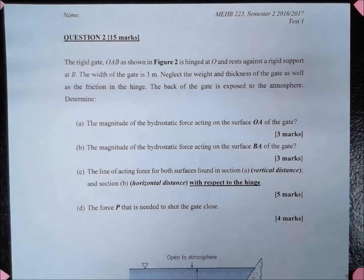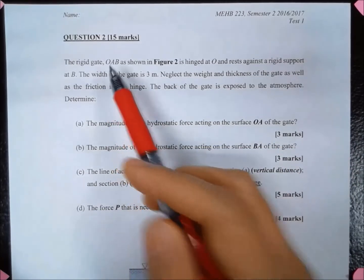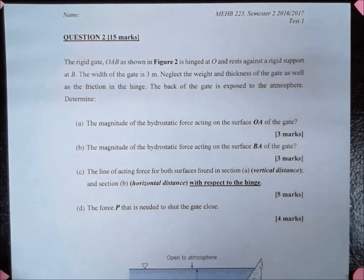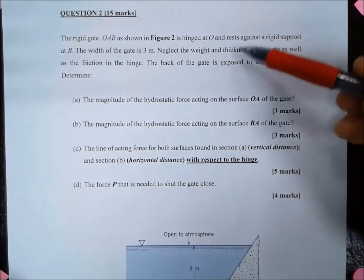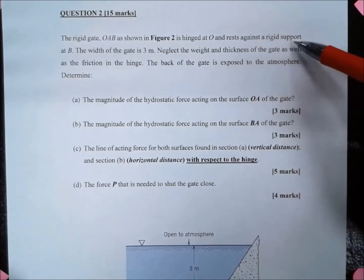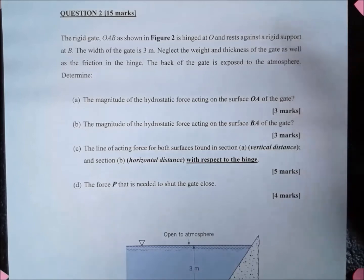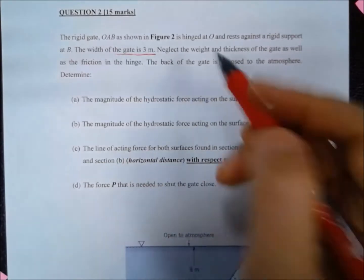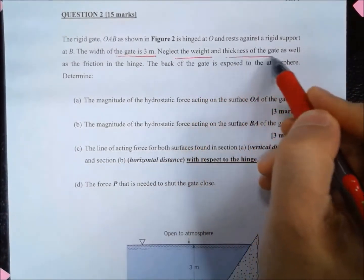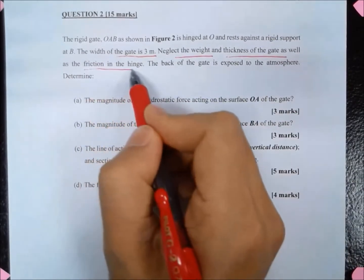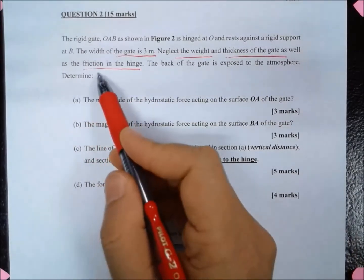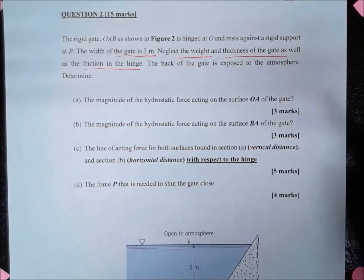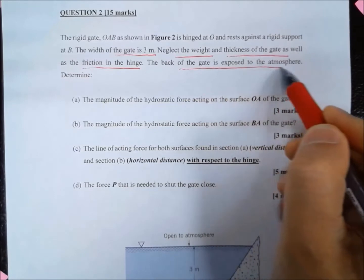Bismillahirrahmanirrahim. This question is related to hydrostatic force on submerged plane surfaces. We have a rigid gate hinged at O and resting against a rigid support at B. The width of the gate is 3 meters. We neglect the weight and thickness of the gate, as well as the hinge and friction in the hinge. The back of the gate is exposed to atmosphere.